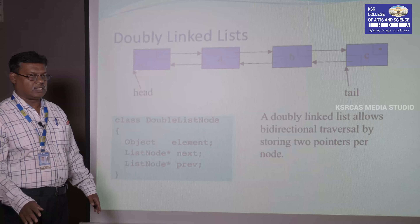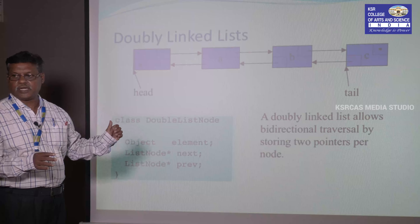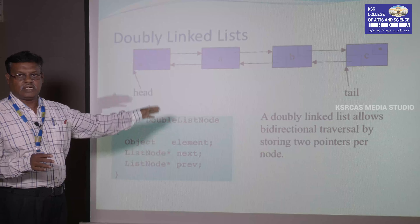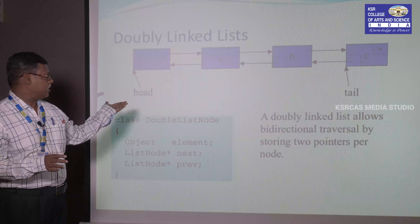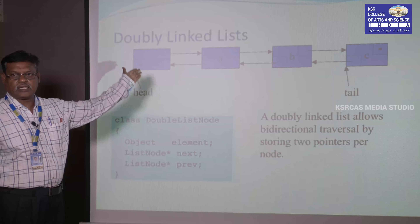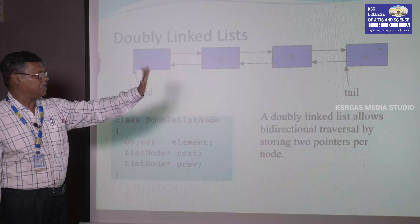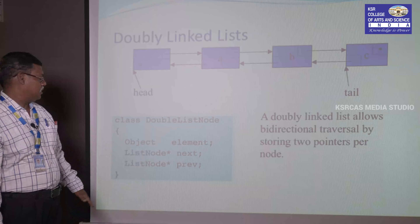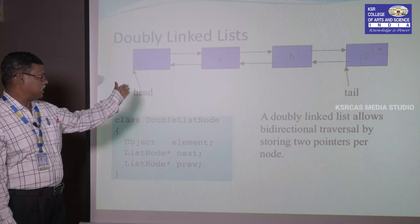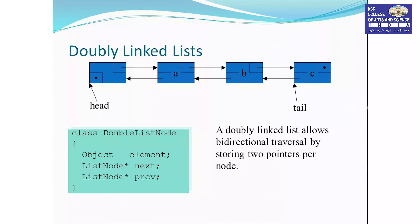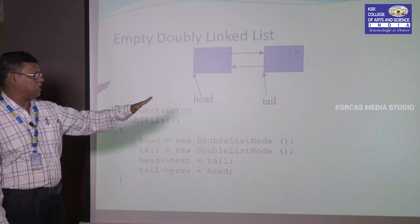Next is the doubly linked list. In a single linked list, we move in only one direction from head node to last node, which is a drawback. In a doubly linked list, we can move in either direction — forward to backward or backward to forward. It has a next pointer pointing to the next node, a previous pointer pointing to the previous node, and the object contains the actual data element. In an empty doubly linked list, head points to tail and tail points to head.